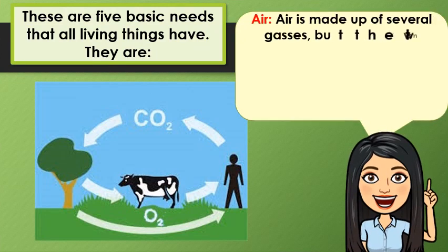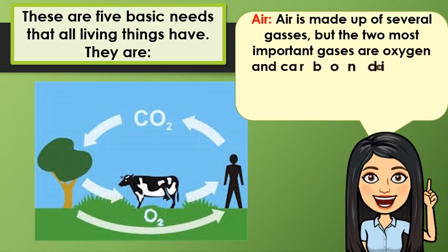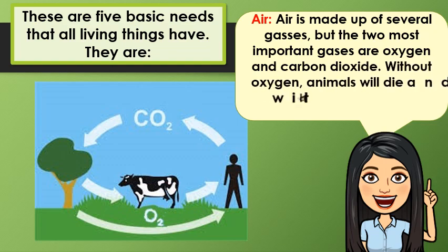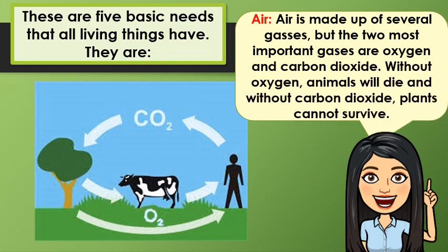Next, we have the air. Air is made up of several gases, but the two most important gases are oxygen and carbon dioxide. Without oxygen, animals will die. And without carbon dioxide, plants cannot survive.